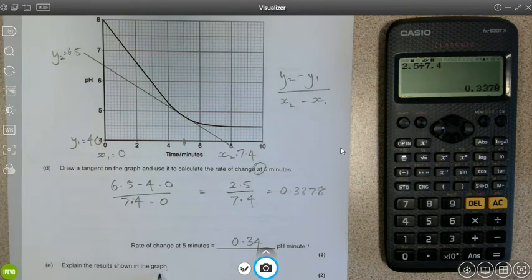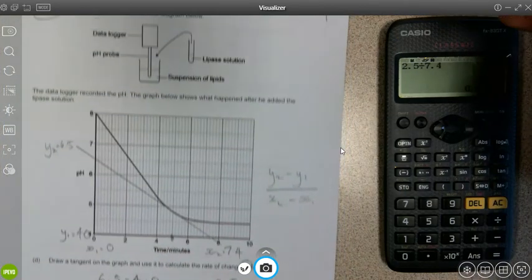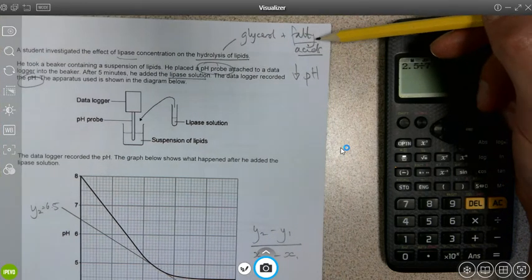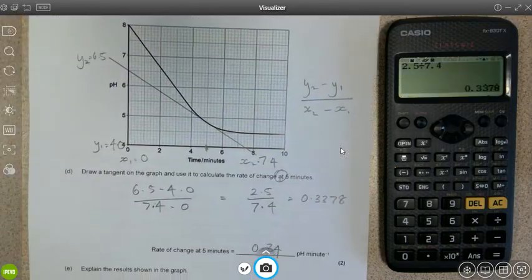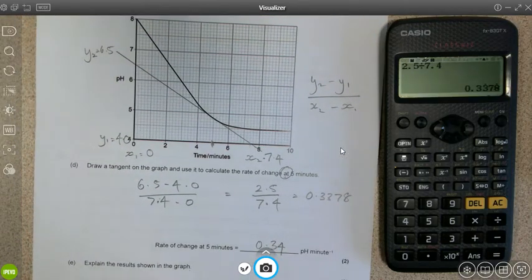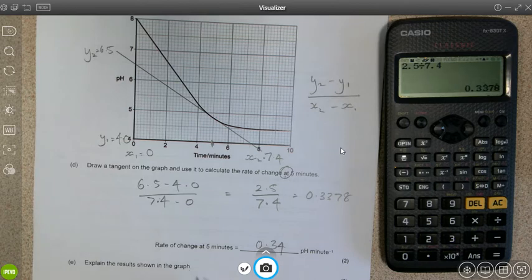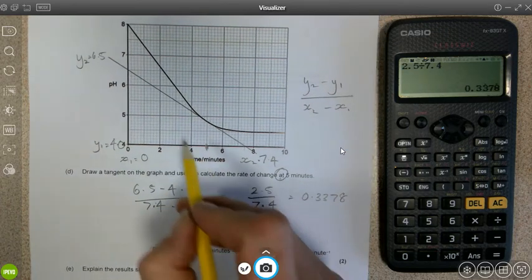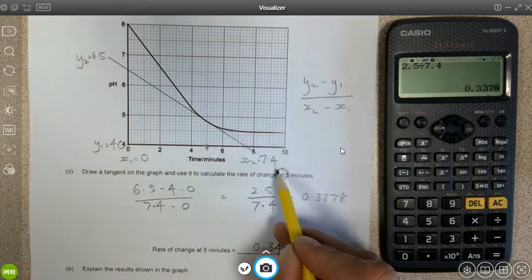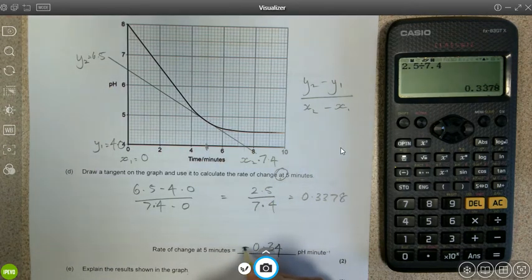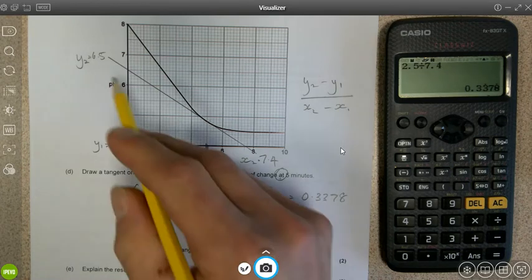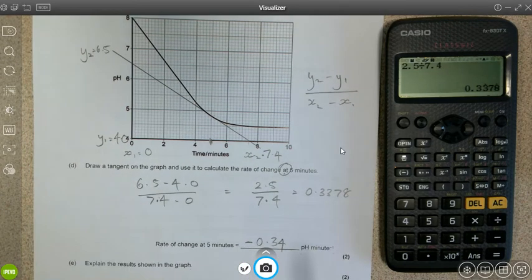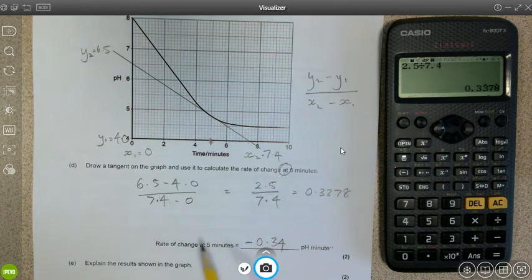Again, this question is followed by 'explain the results shown in the graph.' We've already said that the hydrolysis of lipids will involve the production of fatty acids. So to explain the results, we've got the fatty acids being produced. Sorry, I've just remembered something, because this is a negative change we should show on the rate of change there, but it's minus 0.34 in pH per minute. It's decreasing, so that's a negative value.